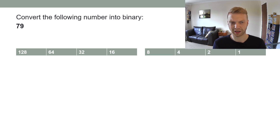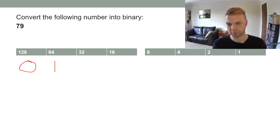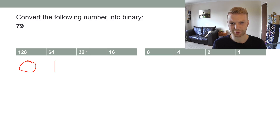Sometimes you get it the other way around where you've got a decimal number and you have to convert it into binary. So for 79, you ask yourself: does 128 fit into 79? No, so you put a 0. Does 64? Yes, so you put a 1. That leaves you with 15. Some of you might know a shortcut if it's one less than a power of two, but we'll go through it anyway.